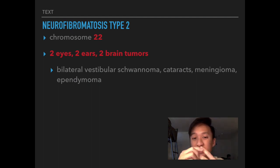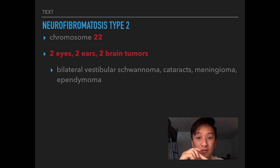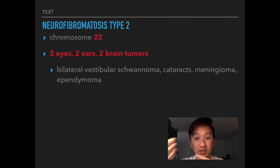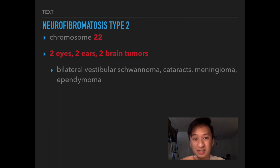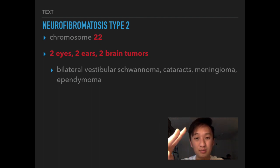The two brain tumors in NF Type 2 are ependymoma and meningioma — do not confuse meningioma with medulloblastoma. Both are tumors that can present in children, which may cause confusion alongside the juvenile cataracts, but it is specifically meningioma and ependymoma, not medulloblastoma.